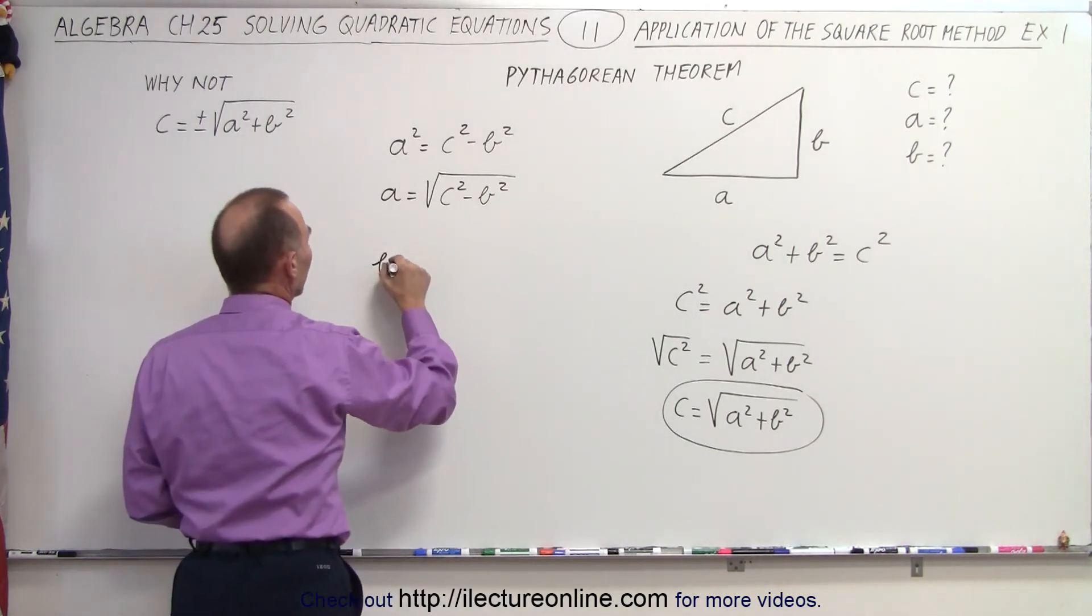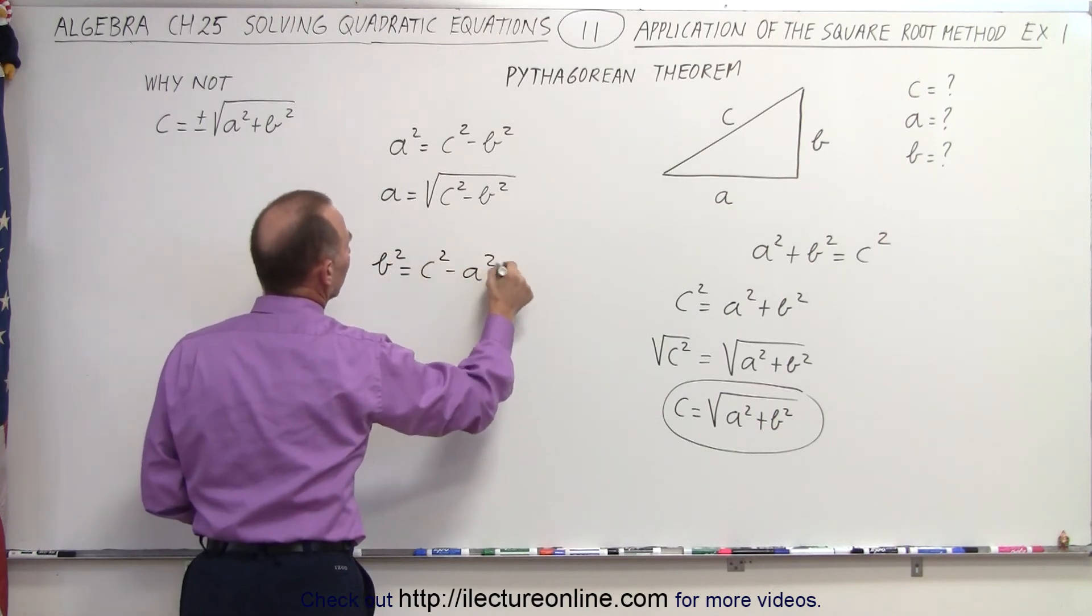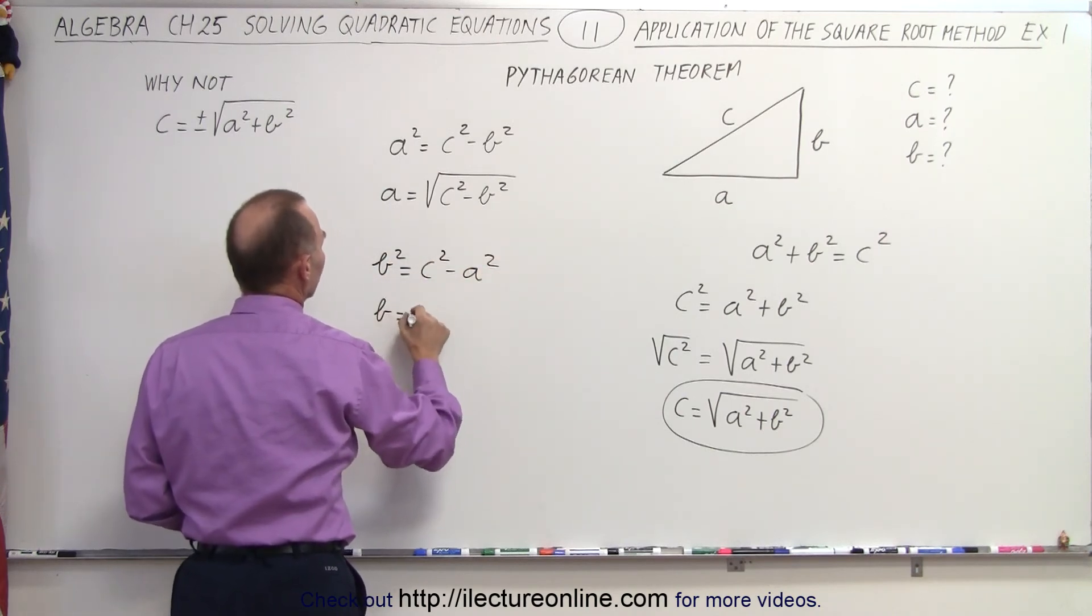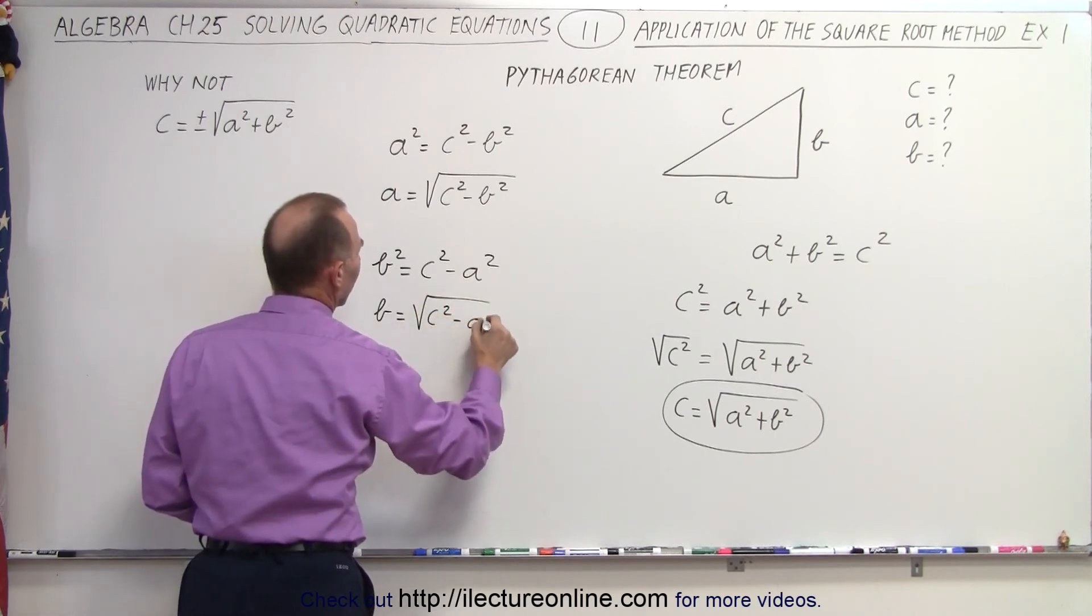And solving for b squared, b squared is equal to c squared minus a squared. And so therefore, b is equal to the square root of c squared minus a squared.